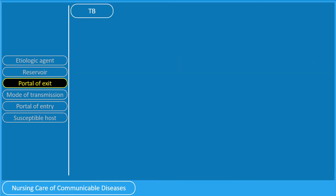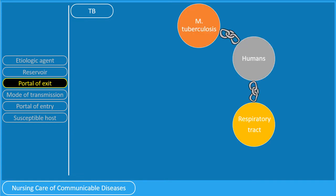Let us apply the portal of exit to TB. The causative agent, Mycobacterium tuberculosis, which resides in the respiratory tract of humans, exits via the respiratory route through coughing, sneezing, or even talking.